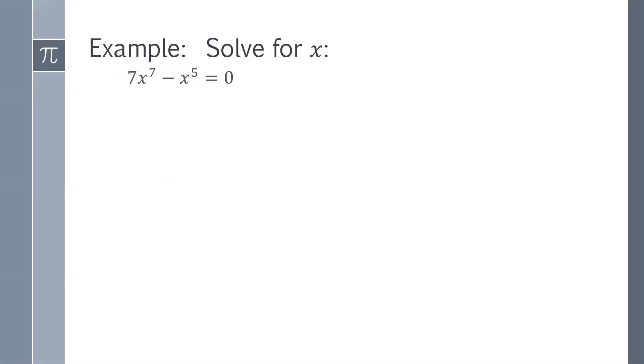Here we factor x^5 from both terms. We're left with 7x² - 1 = 0. So either x^5 equals 0, so x is 0, or 7x² - 1 = 0, meaning x is plus or minus the root of 1/7.